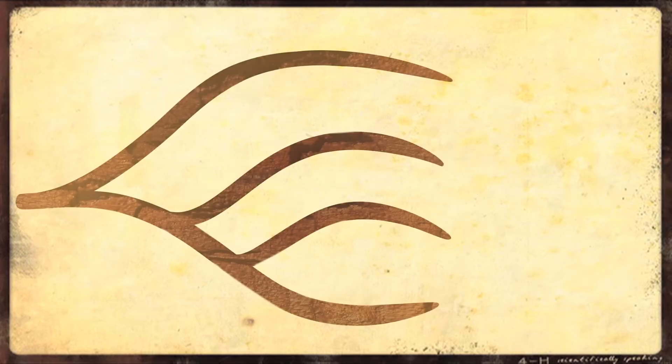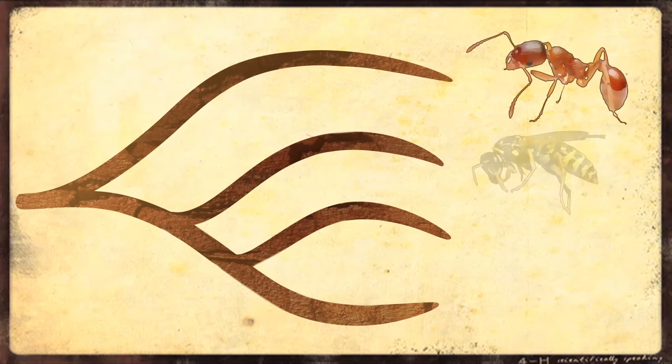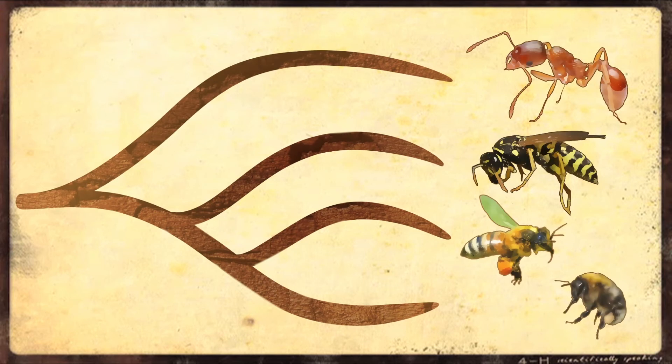By placing these species into a phylogenetic tree, we can see that ants branched off first, followed by the wasps, and then finally bees. The tree tells us when each group originated in evolutionary time.